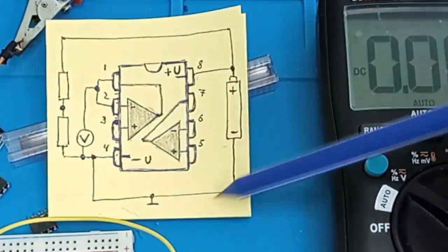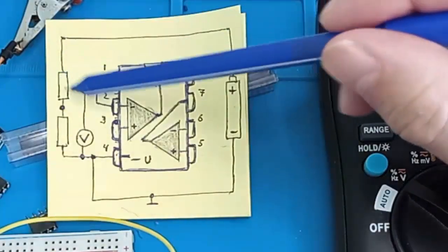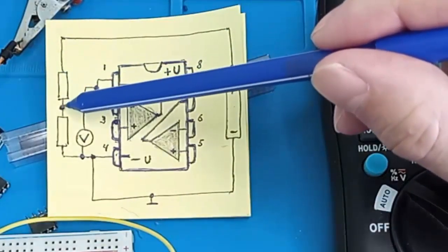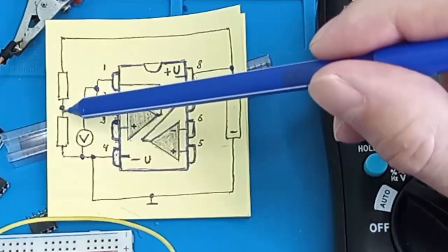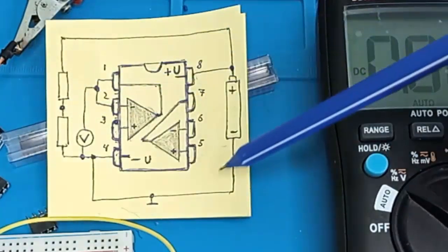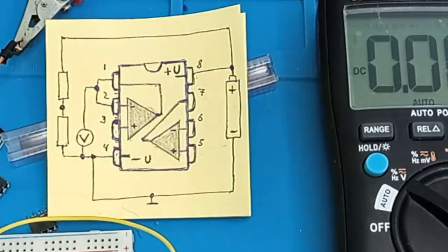They are connected between the negative rail of the power supply and the positive rail. Because they are the same, here at the midpoint is half the supply voltage. In our case, with a 5 volt power source, at the junction of the resistors, 2.5 volts are obtained.